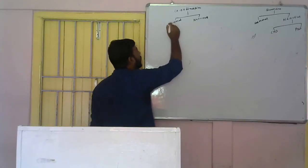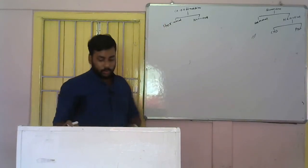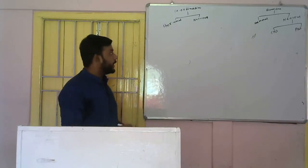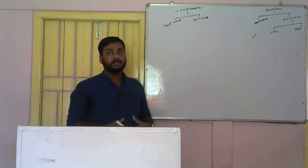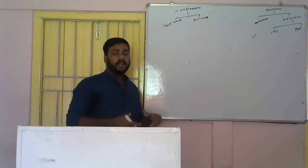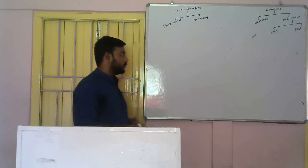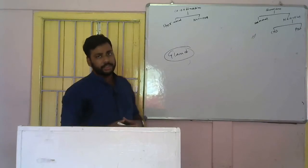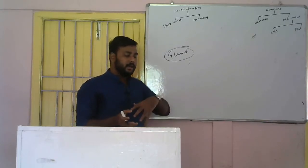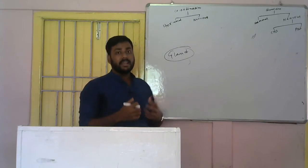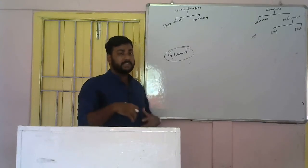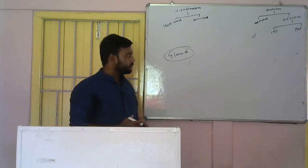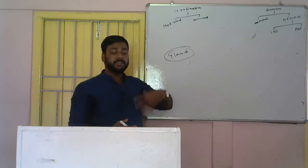Next up is hormonal coordination in humans. Before understanding hormonal coordination, you need to understand a few terms: what is a gland, what is an endocrine gland, what is an exocrine gland, and what are hormones. Glands are those specialized tissues that are specialized for secretion. Glands are of two types: endocrine glands and exocrine glands.